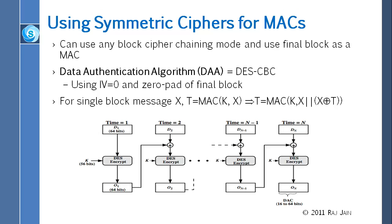DES is right here. This will take a 56-bit key and a 64-bit message — a 64-bit block — and produce a 64-bit output. So the final hash would be 64-bit long.